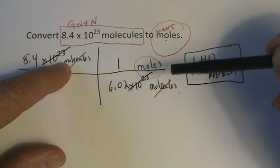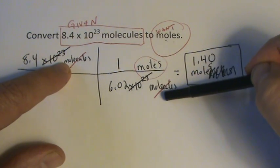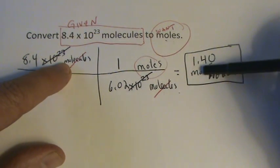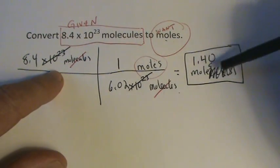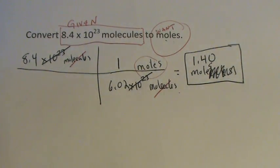We had molecules on the top we needed on the bottom to cancel it out. We put the value we wanted to end up with on top, canceled, did our division, and we got 1.4 moles.